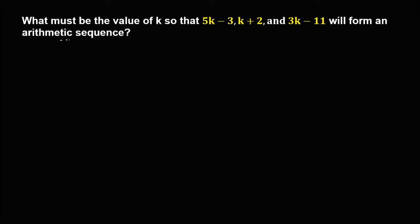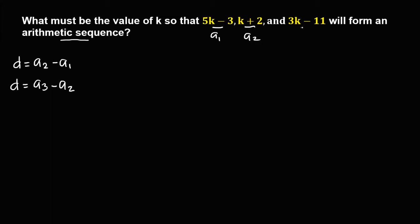Since this is an arithmetic sequence, we can solve for the common difference using a sub 2 minus a sub 1, or using this formula to solve for the common difference: a sub 3 minus a sub 2. From the given, this one is a sub 1, a sub 2, and a sub 3. So we're going to equate these two equations to solve for k.